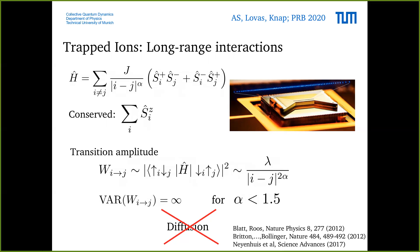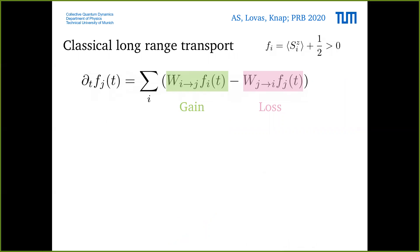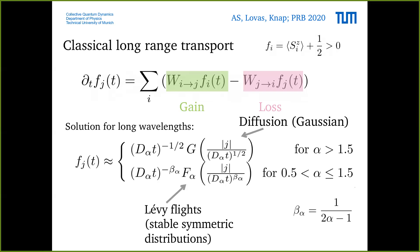One way to study this is to look at a classical transport equation which is linear with a gain and loss term. The solution of this equation is given by this: if alpha is larger than 1.5, so the variance is finite, then we recover a diffusion process. But if alpha is smaller than 1.5, then the process is actually alpha dependent and what we find is essentially a Levy flight - a super diffusive transport process with a dynamical exponent given by two alpha minus one which depends on alpha. One can tune the transport process from diffusive to super diffusive if alpha is changed.